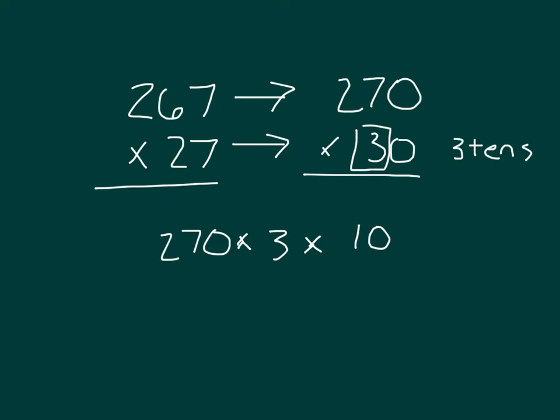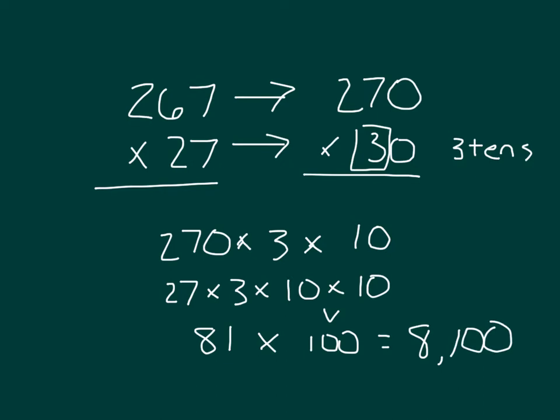270 times 3 is actually 27 times 3 times 10. So we have 10 times 10 here, which is 100. And 27 tripled, which is 81, which is 8,100. 8,100 is our estimated product for this problem.